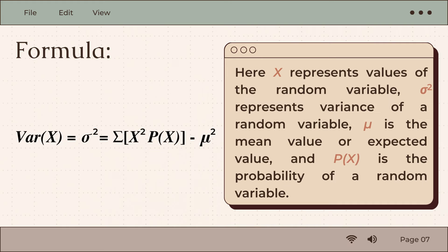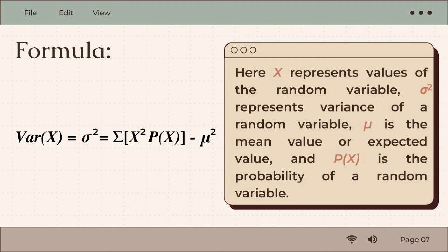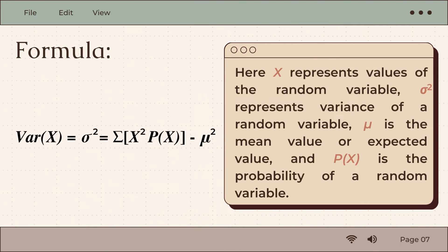Here, x represents values of the random variable, sigma squared represents variance of a random variable, mu is the mean value or expected value, and p of x is the probability of a random variable.